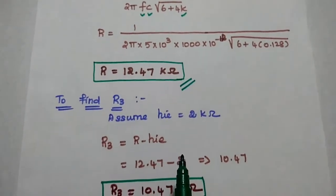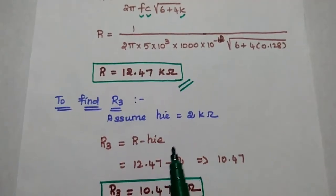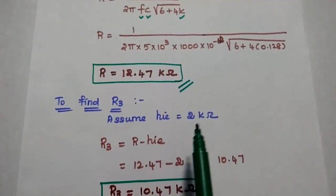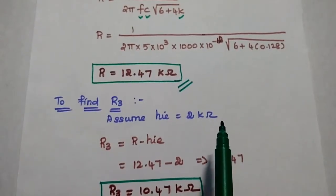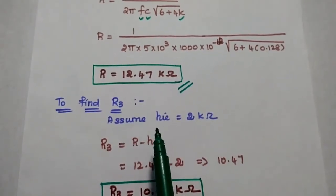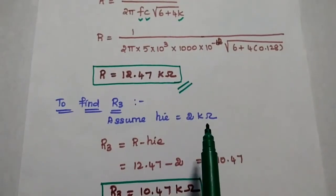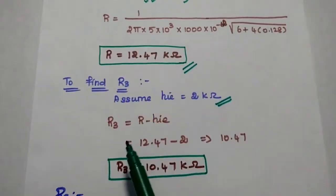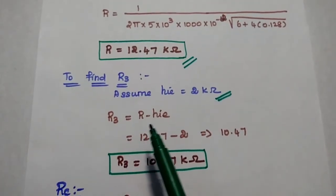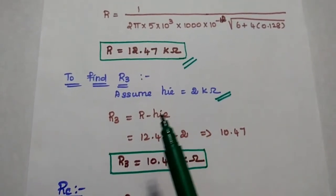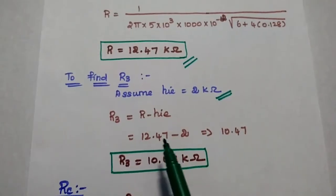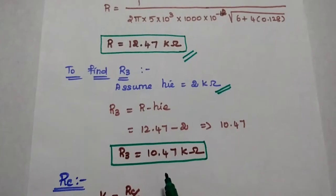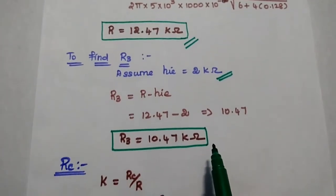Next we find R3. We assume the input impedance HIE = 2 kilo ohm. R3 = R − HIE = 12.47 kΩ − 2 kΩ = 10.47 kilo ohm.